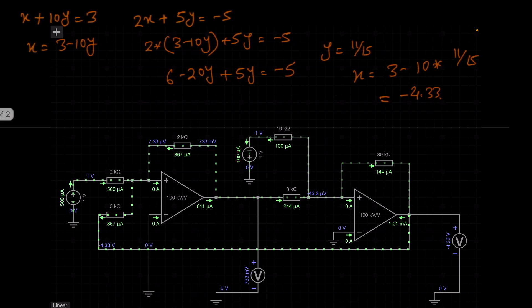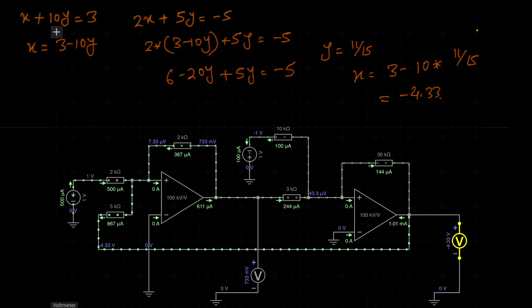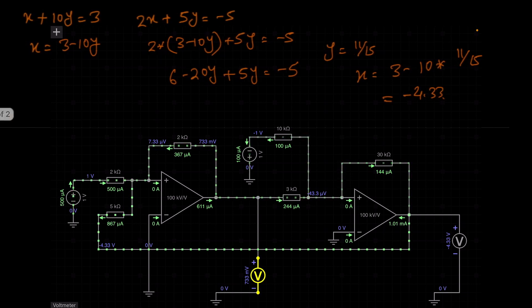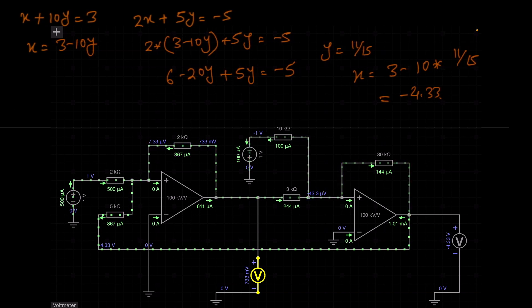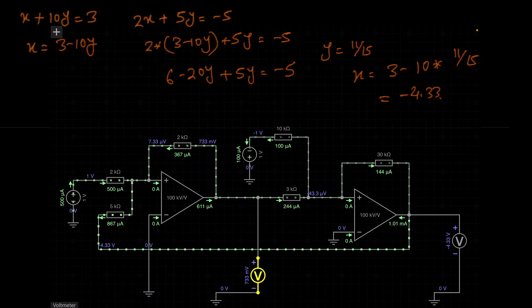Here you can see the output of op-amp 2 gives us the value of minus 4.33 volts. That means the value of x is minus 4.33 and the value of y is 0.733. And if we solve these two equations, we get exactly the same data — x will be minus 4.33 and y will be 0.733.